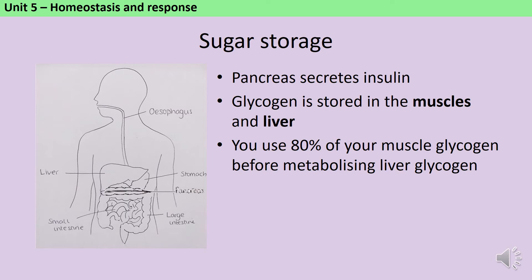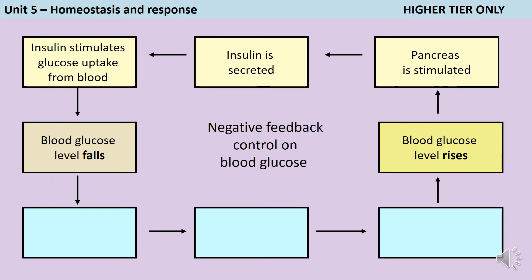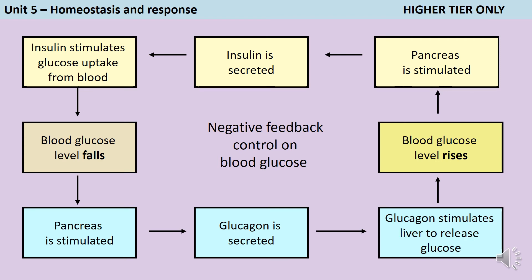When you require energy beyond what you can currently get by respiring using the glucose in your bloodstream — say if you're exercising for an extended period — the glycogen starts to be broken down, and you use about 80% of the glycogen in your muscles before moving on to metabolizing your liver glycogen. When blood glucose starts to fall, either because it's been a long time since your last meal or because you're doing something very energy intensive like exercise, this is detected by the receptor cells in the pancreas, which release another hormone called glucagon. When glucagon is released, glycogen is broken down and the liver starts to release glucose back into the bloodstream.